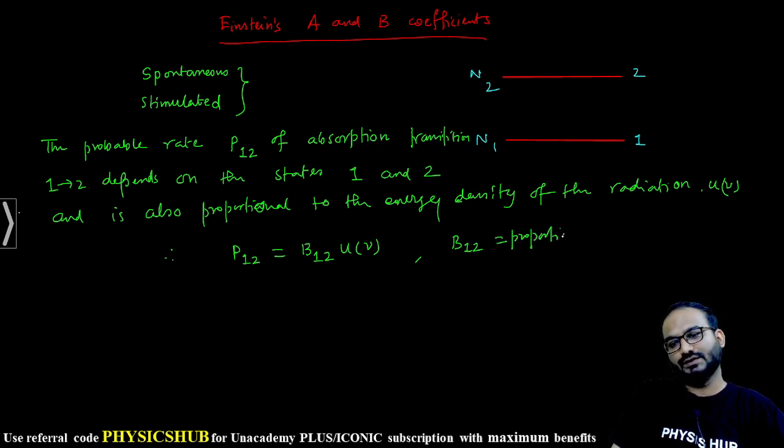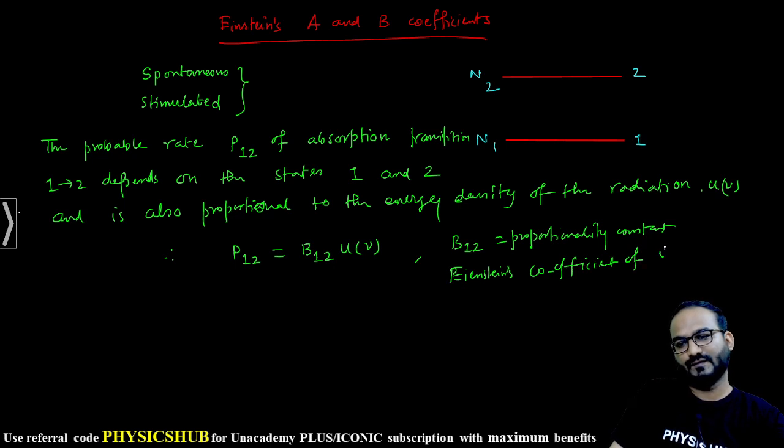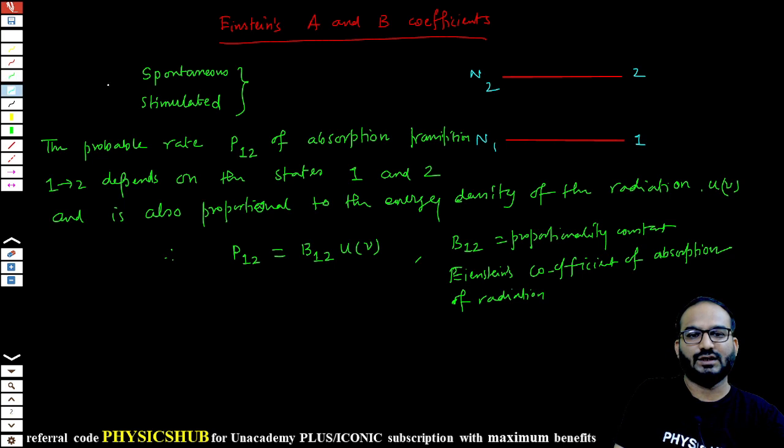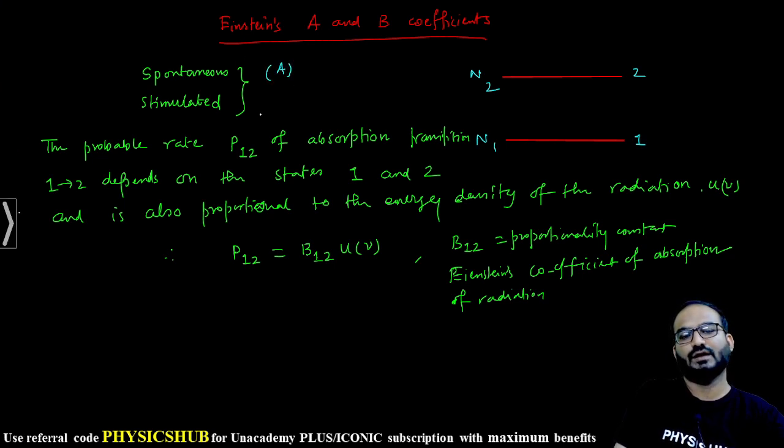So what we can write: P12 equals B12 u(ν), where B12 is a proportionality constant which is known as the Einstein B coefficient. This is known as Einstein's absorption coefficient of radiation. Whenever we talk about absorption, some external influence is necessary. That is why B is coming.